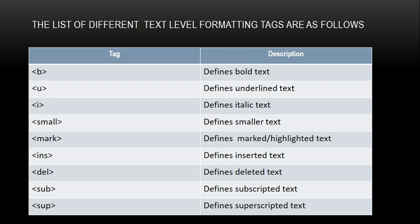Next is the i tag. The i tag defines italic text, meaning the browser usually gives an italic effect — that is, a slant to the right side of the webpage — to text enclosed between the opening i tag and closing i tag. The small tag defines smaller text. The browser usually displays the text one size smaller than the surrounding text.